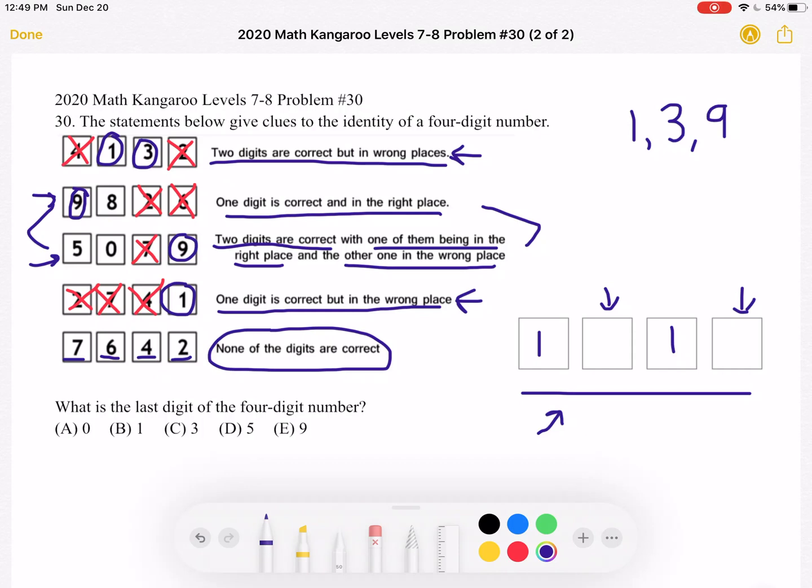So the 1 can either be here or it can be here. But keep in mind what we just learned, that we have the 9. And from this statement, we know that one digit is correct and in the right place. And 9 is in the first spot. So this first spot must go to the 9, leaving 1 with no other option but being in the third place as drawn.